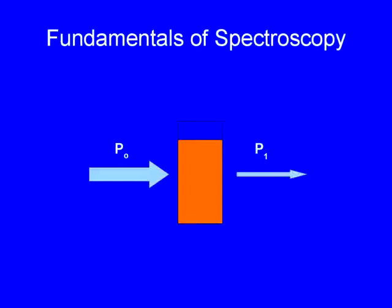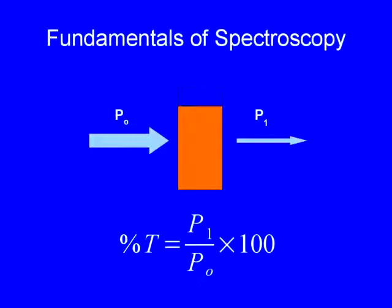We will call the intensity of the light that goes through P1. One way to evaluate the relationship between P0 and P1 is called transmittance. The percentage of transmittance is defined as the ratio of P1 to P0 times 100. There are instruments that can measure that value.